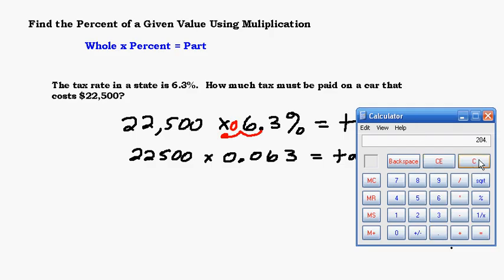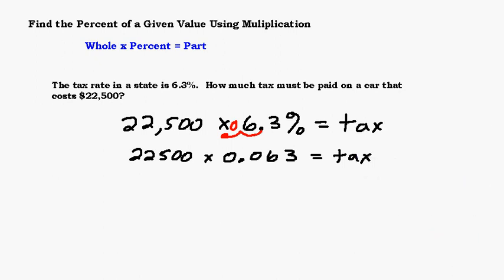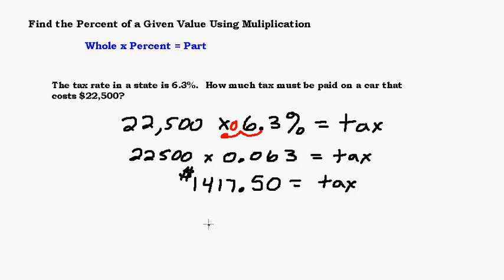Let's use the calculator for this one. 22,500 times 0.063 equals 1,417.5. Since we're talking about tax, which is money, we should make it look like money — so we add a zero to get a final answer of $1,417.50.